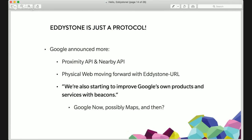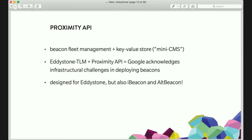Starting with the Proximity API — this is essentially Google's beacon fleet management and key-value store. I like to call it a mini CMS API. It's a web API, a RESTful API. Right off the bat, I find it very interesting because the fleet management part of the Proximity API and the telemetry packets basically means Google acknowledges all the challenges that exist when deploying beacons — you need to keep track of hundreds, maybe thousands of devices spread across multiple geo locations, and you need to assign content to those identifiers.